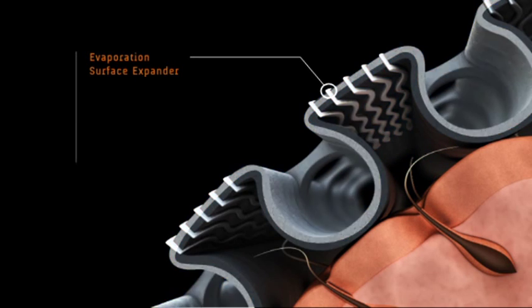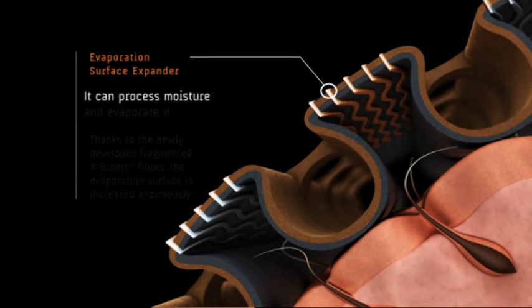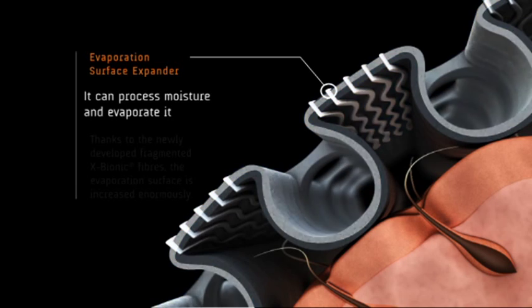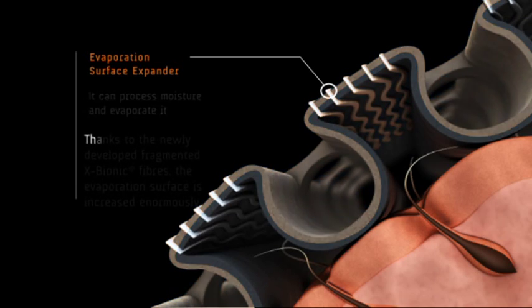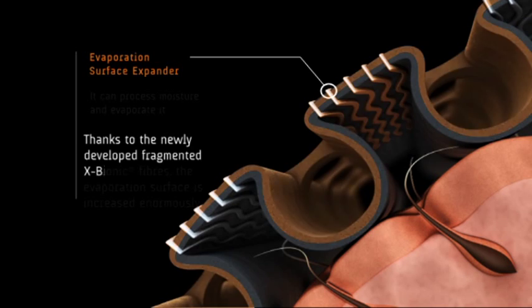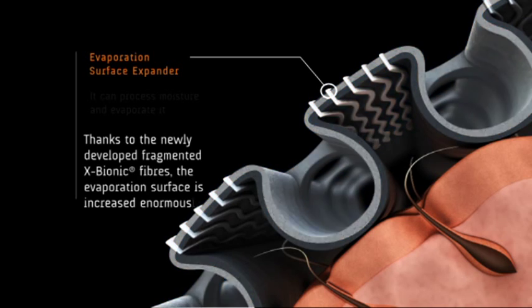The evaporation surface expander processes moisture for evaporation. Thanks to the newly developed fragmented X Bionic fibers, the evaporation surface is increased enormously.